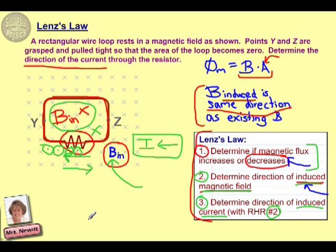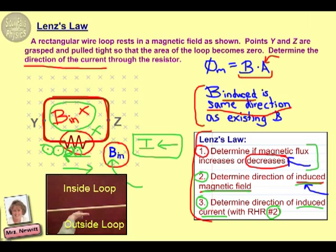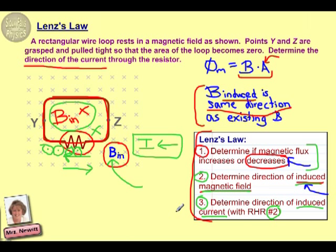If we wanted to, we could do a quick double check here of the other direction and see what happens if it's to the right. Notice that in that case we would line our thumb up to the right. In this case our fingers would be coiling in under the wire and on top of the wire they would be coming out. So that would give us the reverse situation of what we want, which is just further confirmation that our current flows to the left through the resistor.